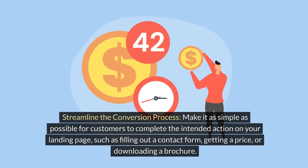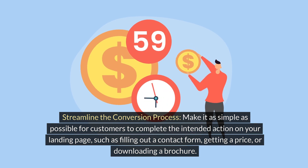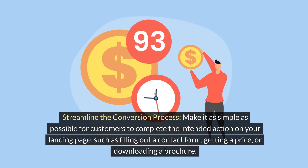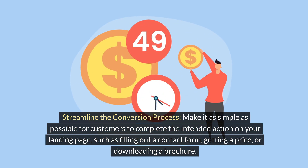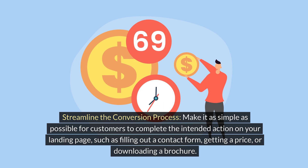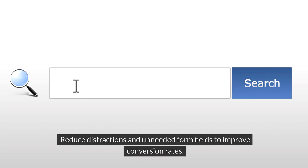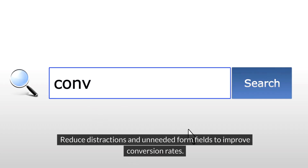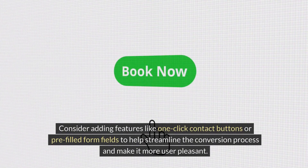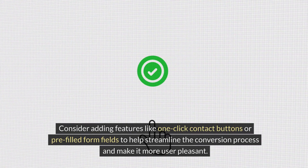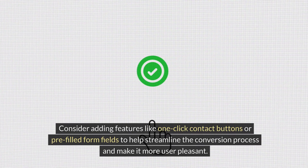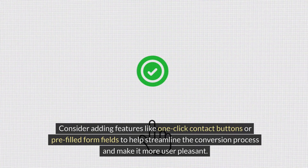Streamline the Conversion Process: make it as simple as possible for customers to complete the intended action on your landing page, such as filling out a contact form, getting a price, or downloading a brochure. Reduce distractions and unnecessary form fields to improve conversion rates. Consider adding features like one-click contact buttons or pre-filled form fields to help streamline the conversion process and make it more user-friendly.